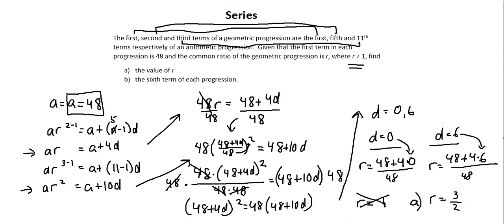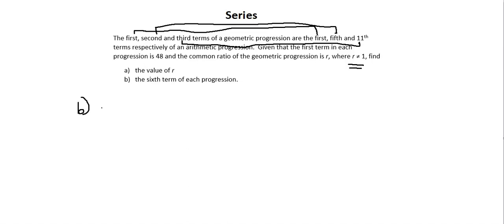Now requirement b, the sixth term of each progression. For requirement b, the geometric series sixth term: For the geometric term, we have 48, which is a, times r, we've calculated as 3 over 2. 3 over 2 to the power of 6 term is an exponent of 6 minus 1. So 48 times 3 over 2 to the power of 5 simplifies to 729 over 2.